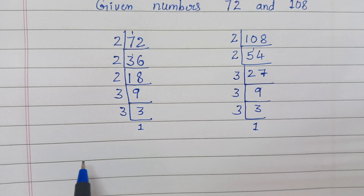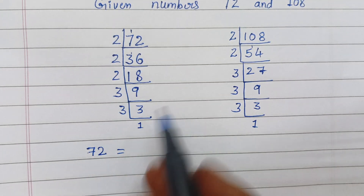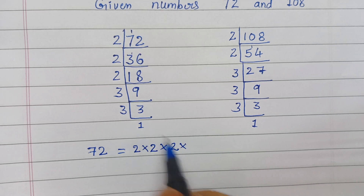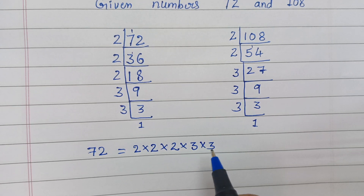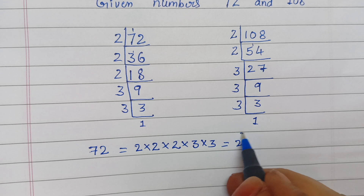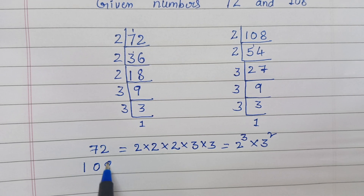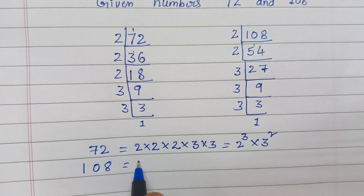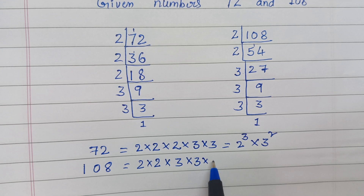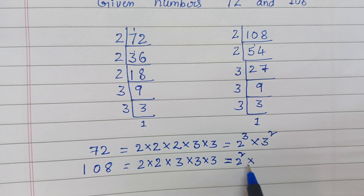Now write the prime factorization — product of prime factors for each number. For 72: 2 × 2 × 2 × 3 × 3, which gives 2 power 3 into 3 power 2. For 108: 2 × 2 × 3 × 3 × 3, which gives 2 power 2 into 3 power 3.